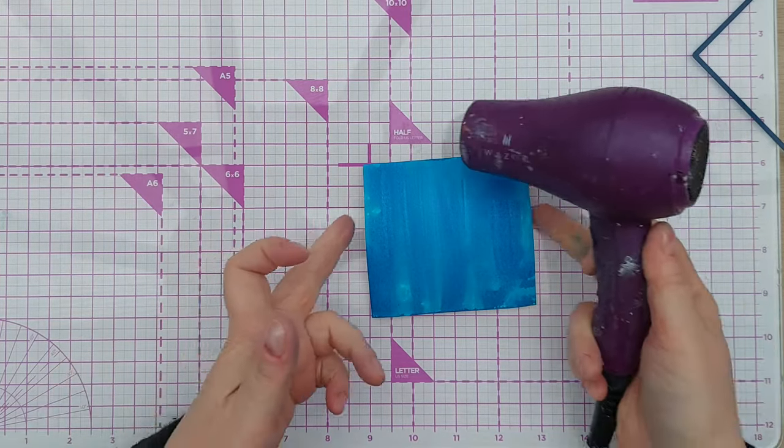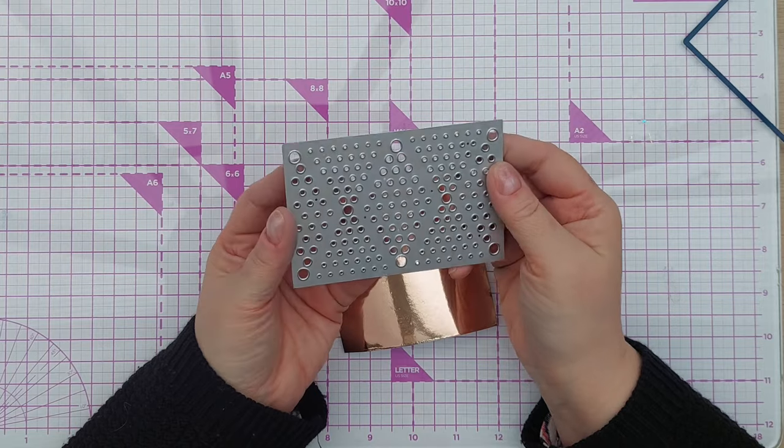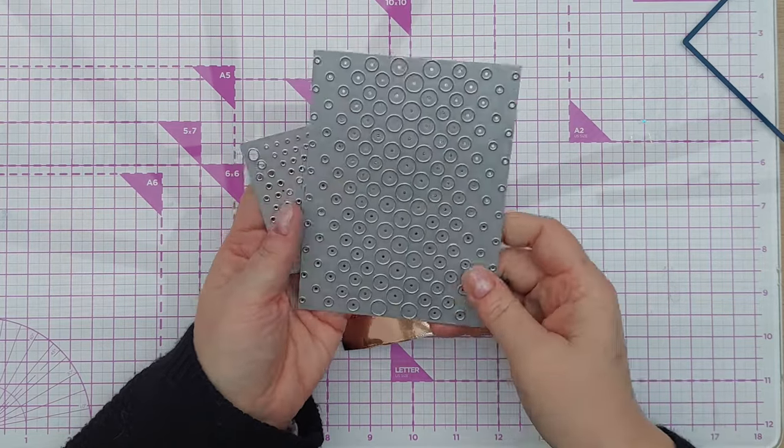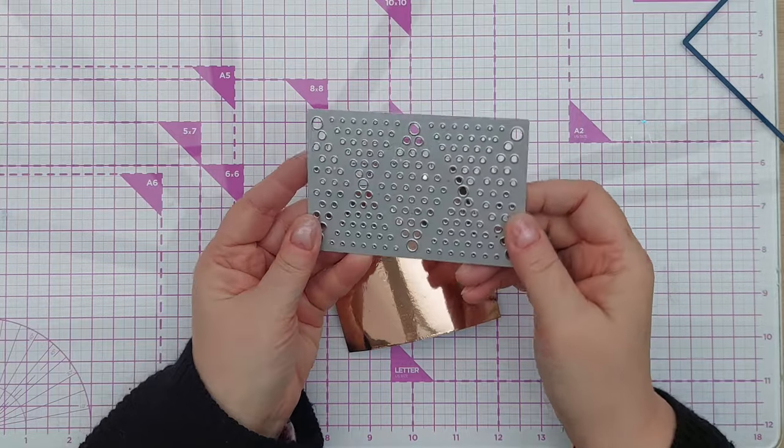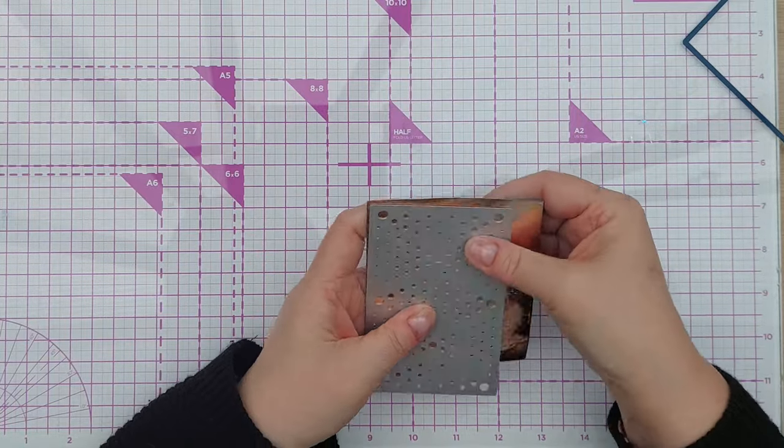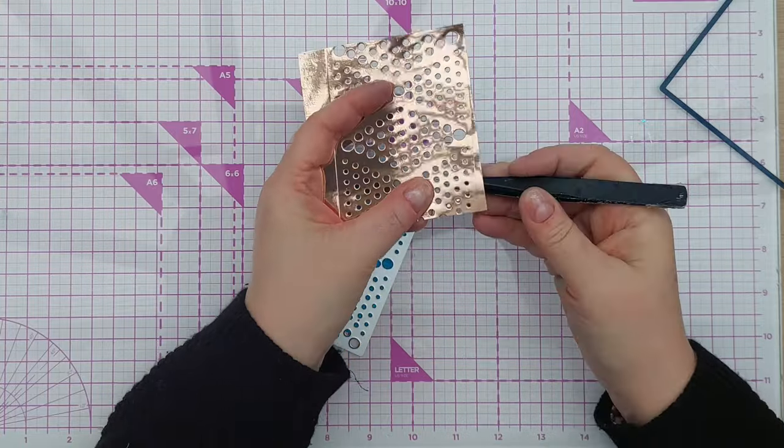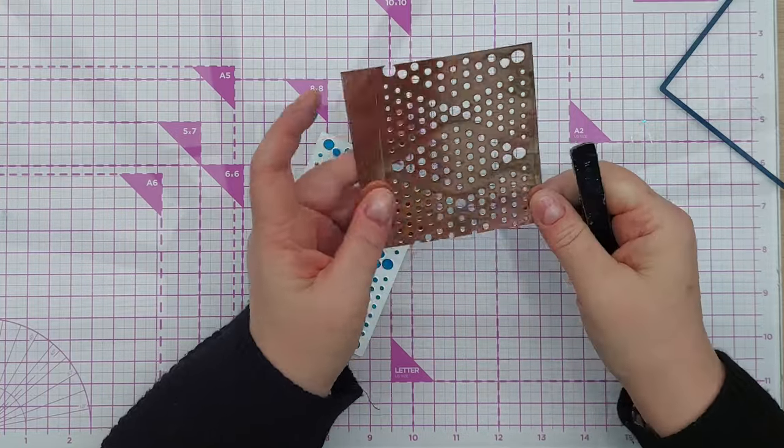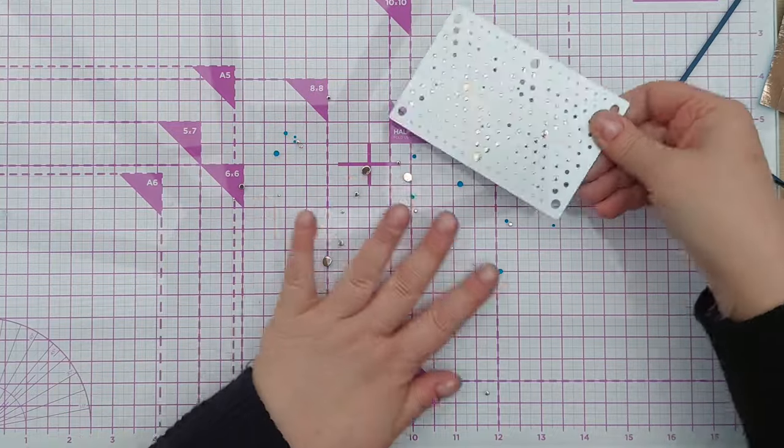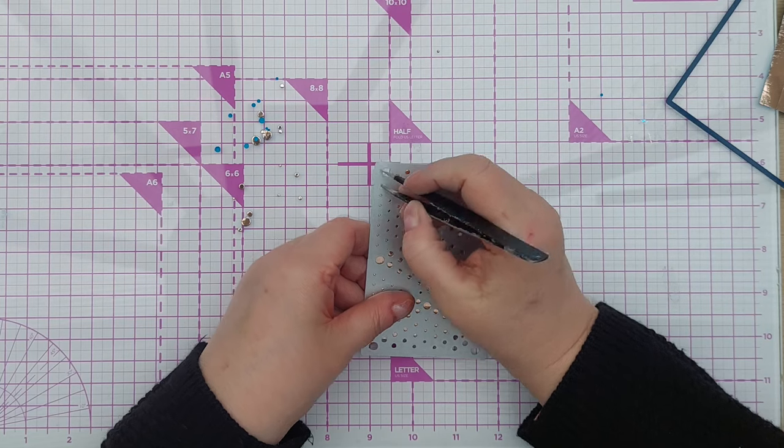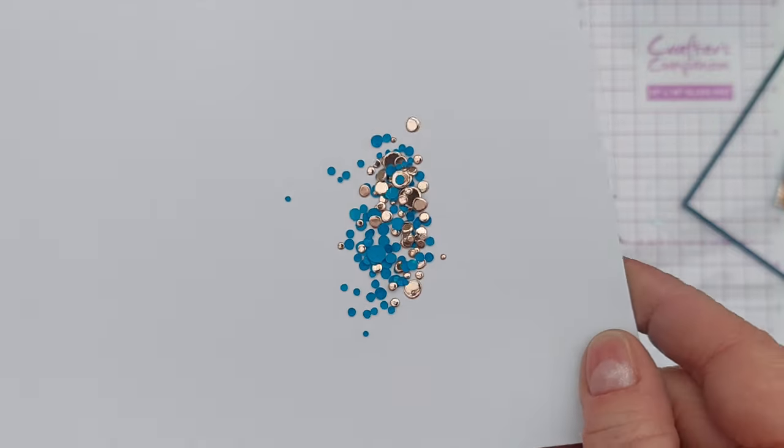I'm trying not to get it on my fingers because I don't want to look like a Smurf for the rest of the week. I'm going to thoroughly dry that with my hairdryer because I want to die cut from this. I have here a small cover plate die with lots of wonky circles. I'm just going to die cut these. It's cut through beautifully - I just need to poke a couple out. So we have a lovely pile of homemade sequins.